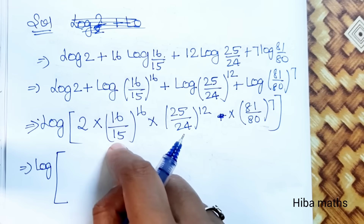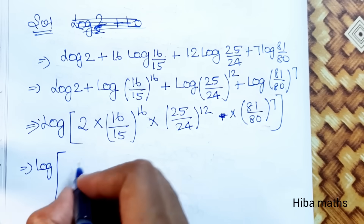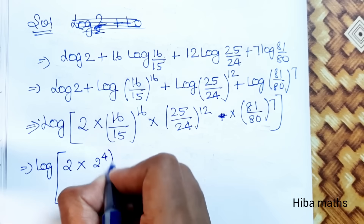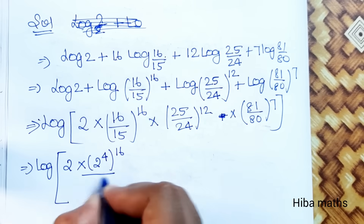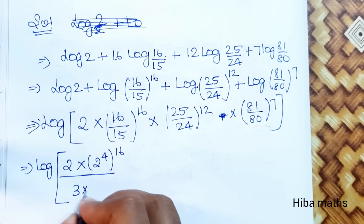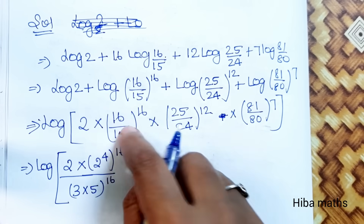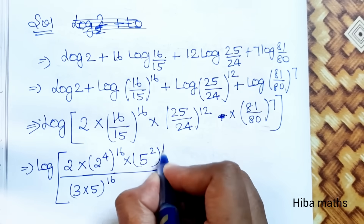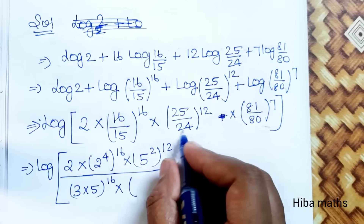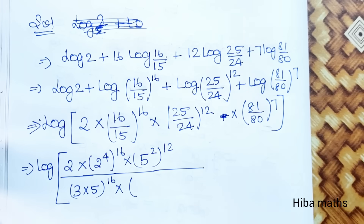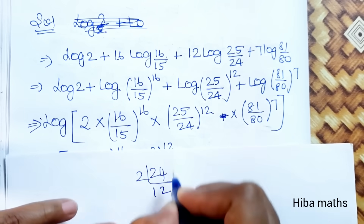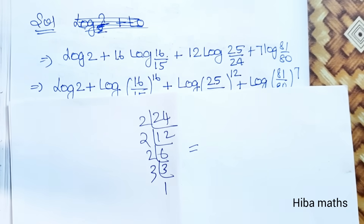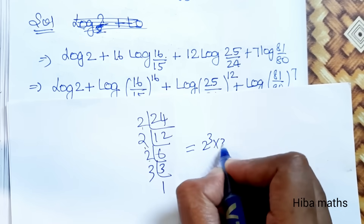Prime factorization: 16 = 2 power 4; 15 = 3 × 5. So 16/15 gives 2 power 4 over (3 × 5). For 25/24: 25 = 5 squared; 24 = 2 power 3 × 3 power 1. So 24 prime factorization is 2 power 3 × 3 power 1.